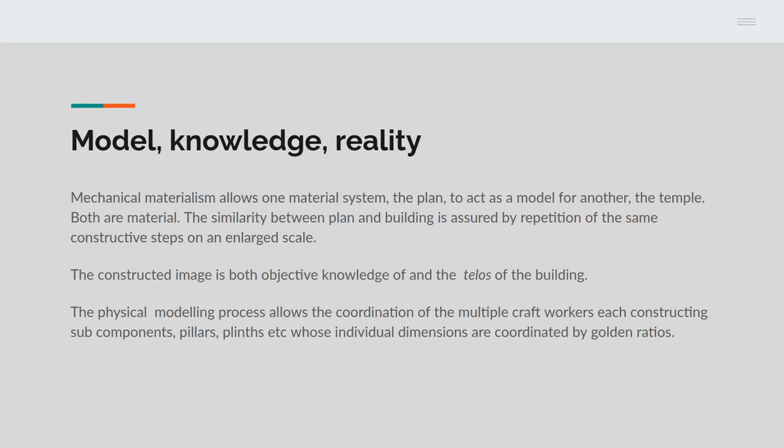The point about this is it actually is very close to the Leninist theory of knowledge. Mechanical materialism allows one material system, the plan, to act as a model for another, the temple. Both are material. The similarity between plan and building is assured by the repetition of the same constructive steps on a large scale. Therefore it's established by practice. The constructed image is both objective knowledge of the building and, in the terms of the philosopher Aristotle, the telos of the building, the final cause of the building. The physical modelling process allowed the coordination of multiple craft workers, each constructing the sub-components, the pillars, plinths, etc., whose individual dimensions were coordinated by the golden ratio.